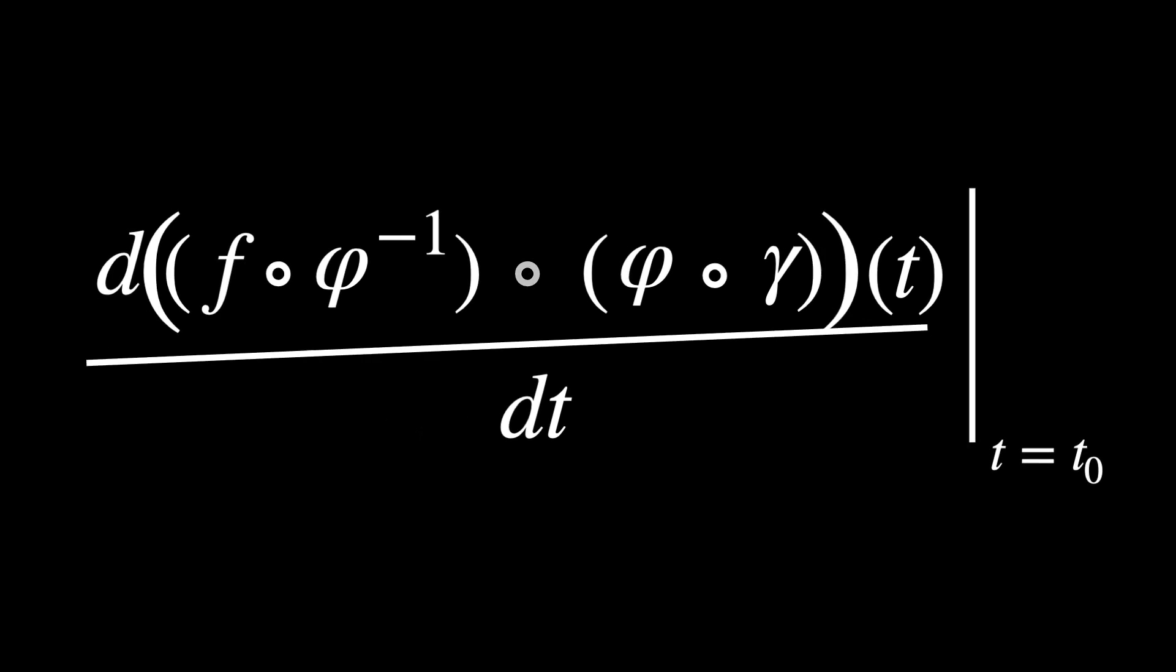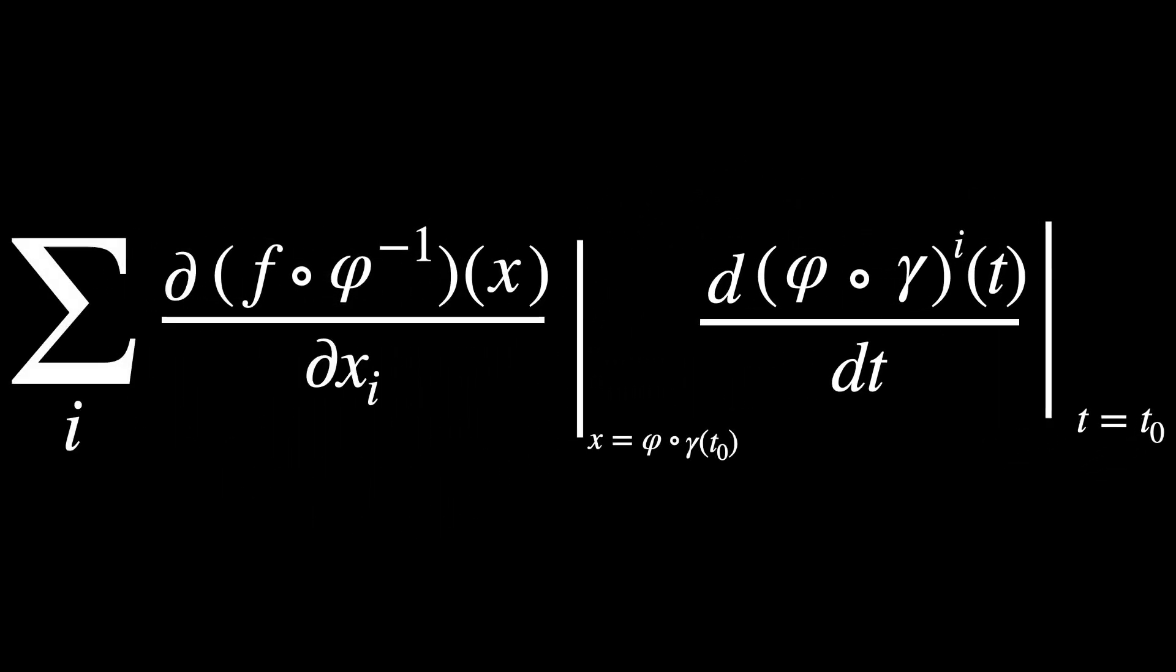Now we introduce the chain rule, which we won't go into detail. But if you want to know more, let us know in the comment section below. Which brings us to here, since P equals gamma of T zero.